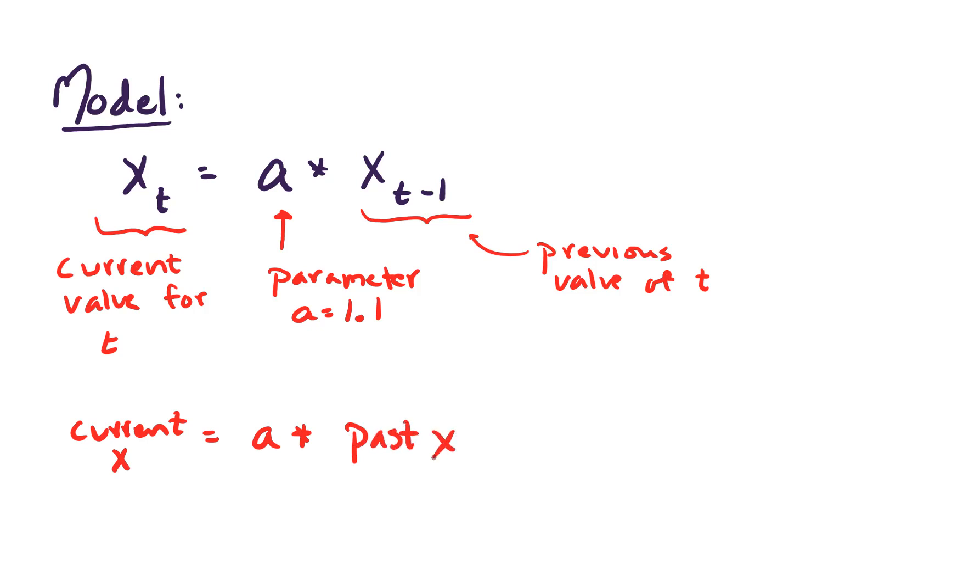So basically the model says, current x equals a times past x. We'll write it as x sub t equals a times x sub t minus 1.